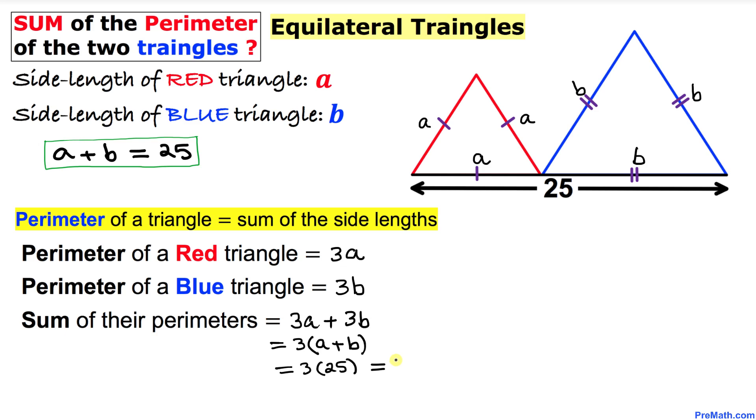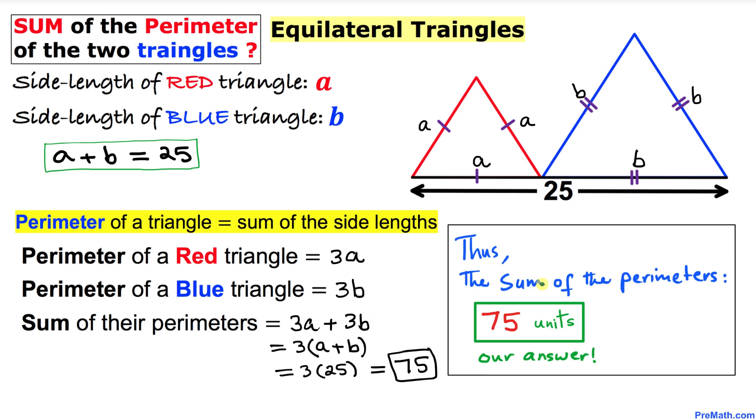Thus the sum of the perimeters of these two triangles turns out to be 75 units and that's our final answer. Thanks for watching and please don't forget to subscribe to my channel for more exciting videos. Bye!